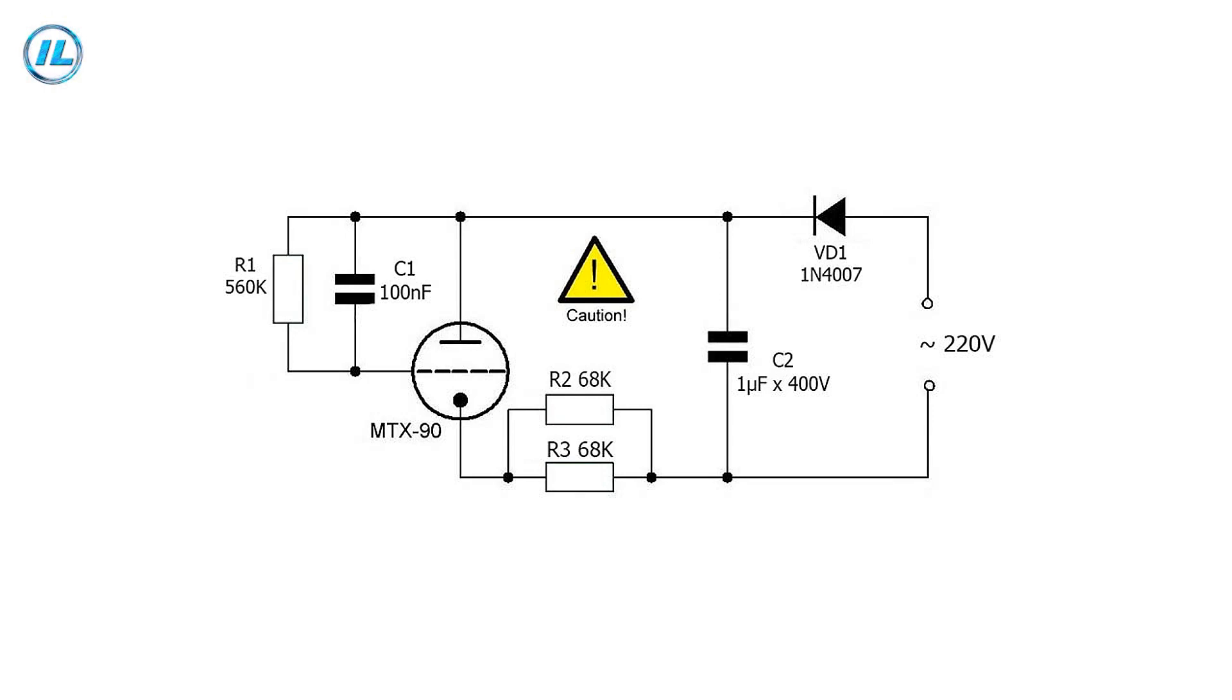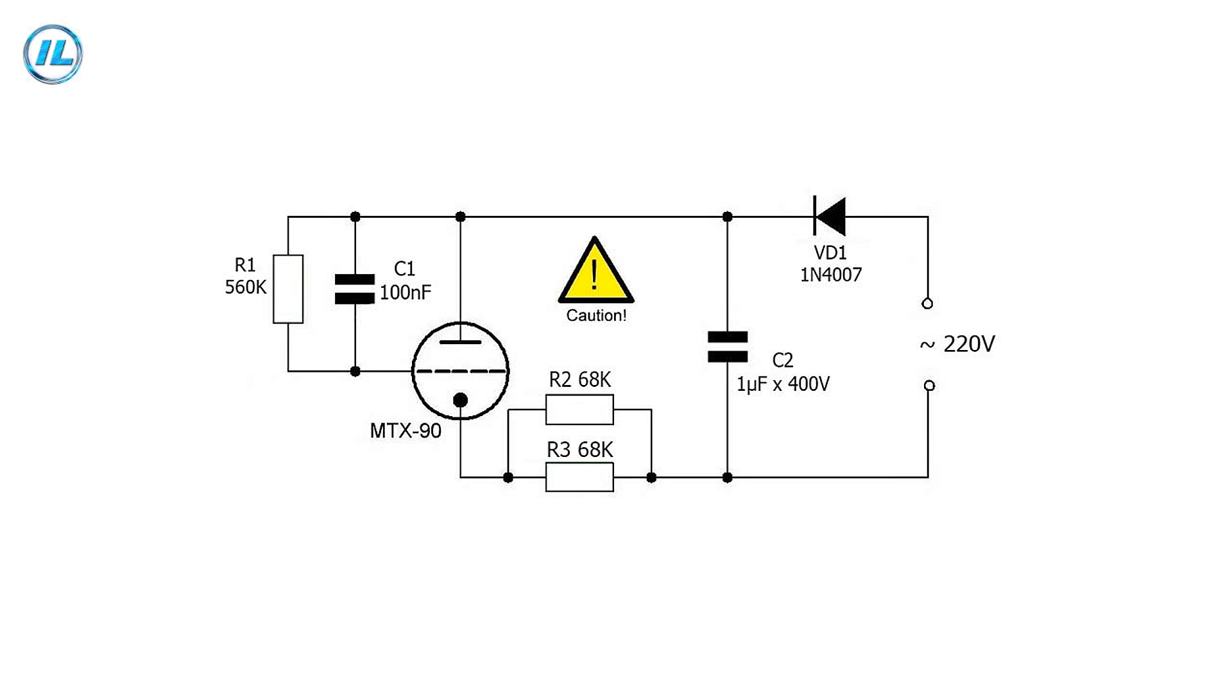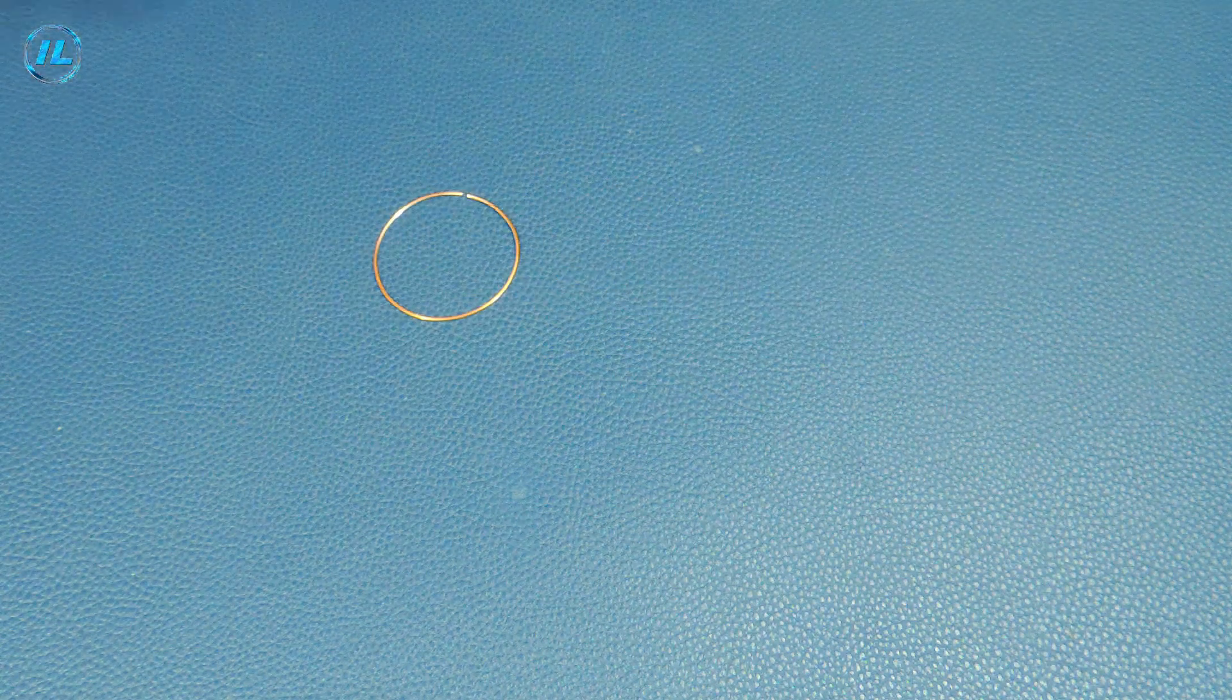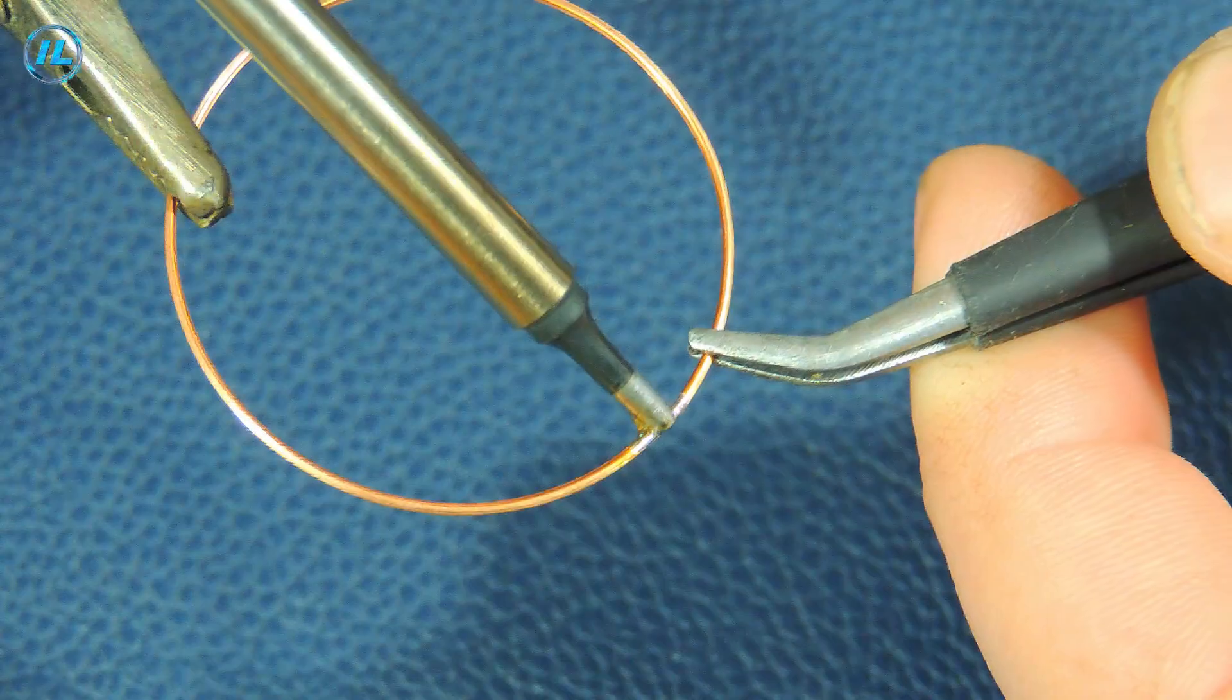The scheme of switching on the MTX-90 Thyretron in neon lamp mode is very simple. It contains only six parts. The Thyretron electrode is called anode, cathode and grid. The grid electrode is located between the anode and the cathode. It is used to ignite a gas discharge in the space between the anode and the cathode. I will make a base from copper wire, to which almost all parts will be attached.